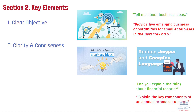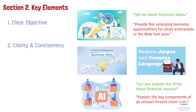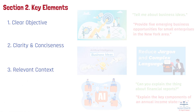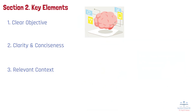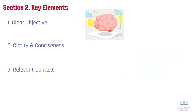This clarity helps the AI understand your request and provide a relevant response. Number 3: Relevant Context. Providing context enhances the AI's ability to generate a pertinent response. Include any necessary background information or details that inform the AI about the situation.